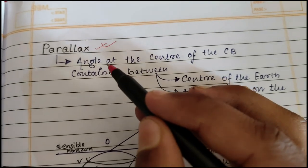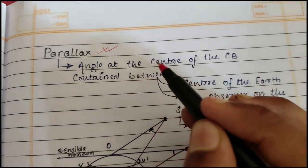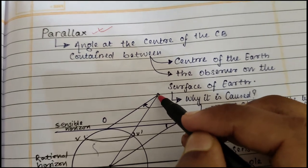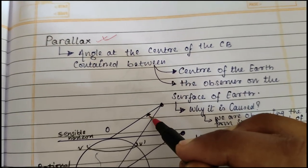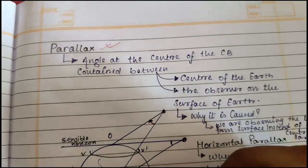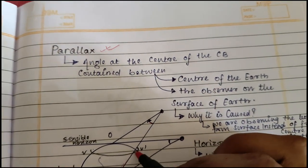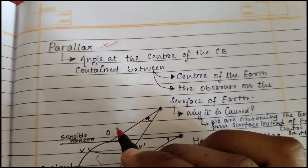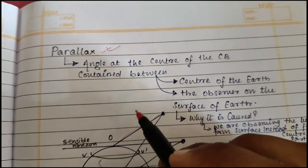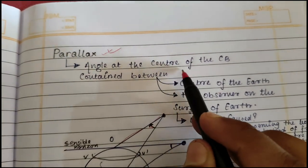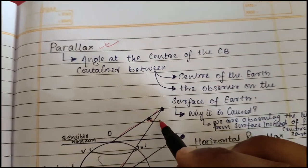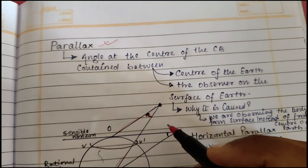So what is parallax? Parallax is the angle at the center of the celestial body, contained by the center of the earth and the observer on the surface of the earth.